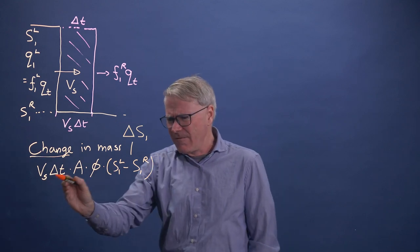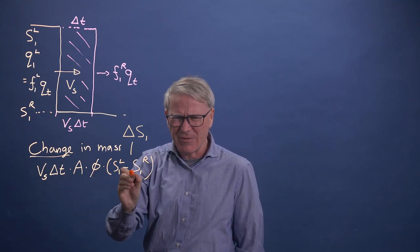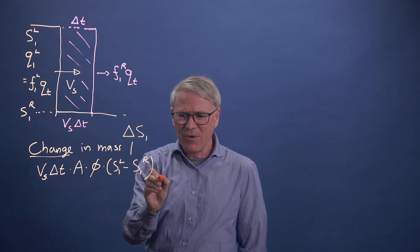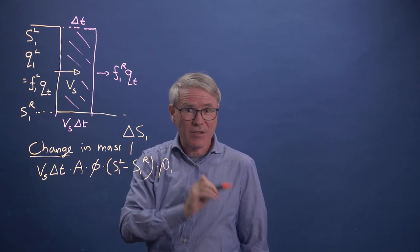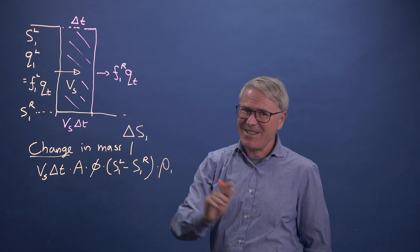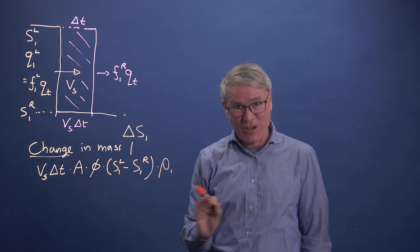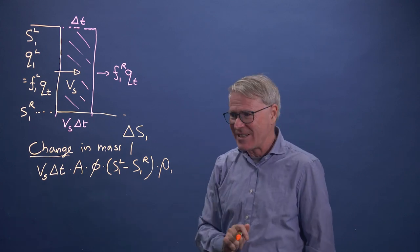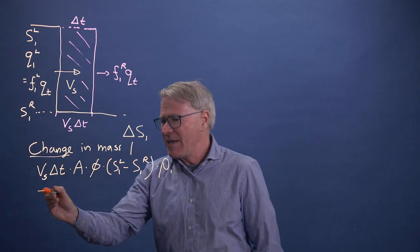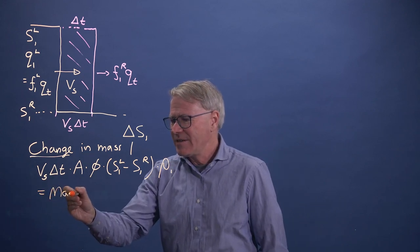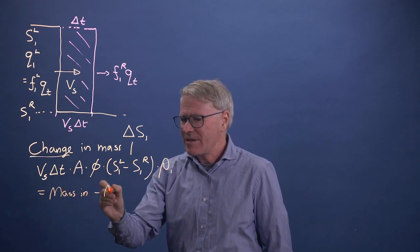So just a moment. Let's think about units here. This is a volume. This is dimensionless. So we've still got a volume. So if you want to be explicit in terms of kilograms, we multiply by density. But we're assuming density is constant. So that's going to cancel out as well. And that's got to be the mass in minus the mass out.